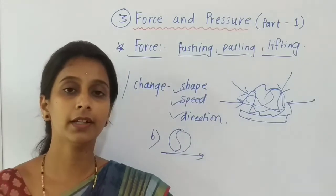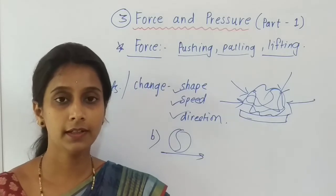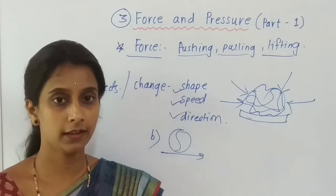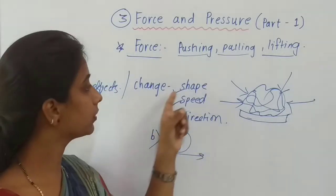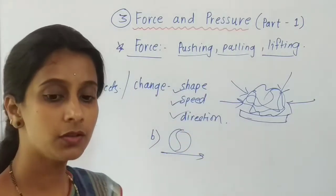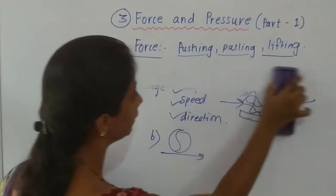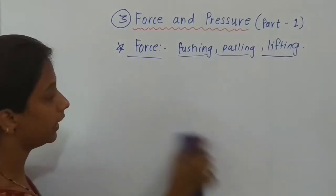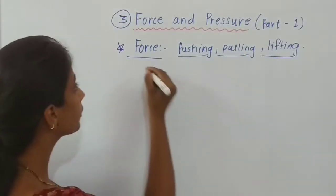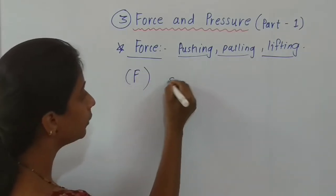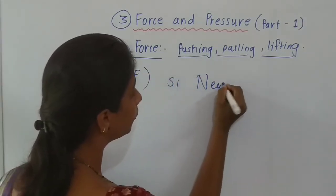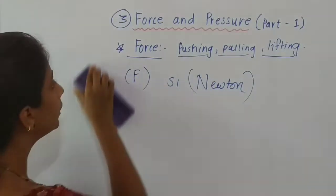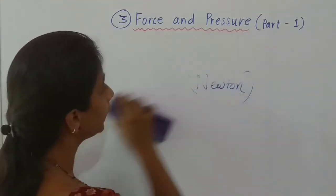Third effect — direction: suppose we are driving a car and we apply force on the steering wheel. At that time the car, which was in motion, changes its direction. So by applying force, shape, speed, and direction of any object can be changed. Force is denoted by capital F, and the SI unit of force is Newton.